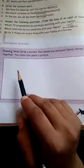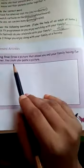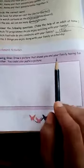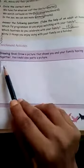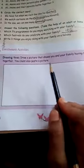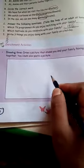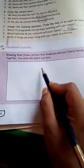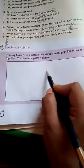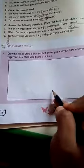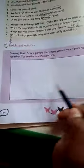Next, here we have an activity. Draw a picture that shows you and your family having fun together. You could also paste a picture. So if you want to draw a picture showing how you enjoy with your family members, for example by watching television, you can draw a television with your family members sitting here. Or you can also paste a picture here which shows that you are enjoying with your family.